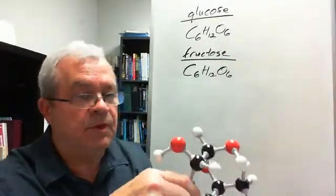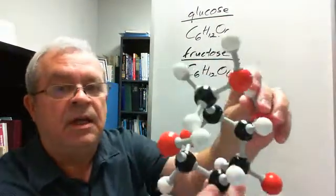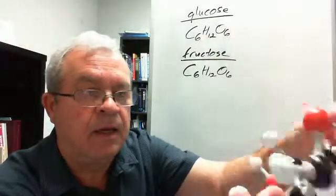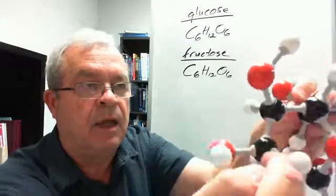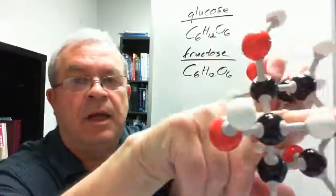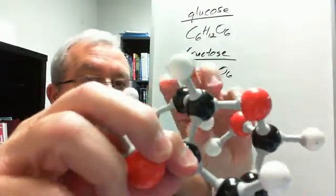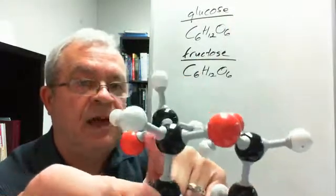Now, just in case some of you are interested in the difference, you notice that both of these molecules have a ring. See that ring? Maybe I'll hold it like this. You can see the ring a little bit better. I'll kind of put my finger inside this ring here. And this is glucose, and the glucose ring has one oxygen and five carbons, and one carbon is off to the side.